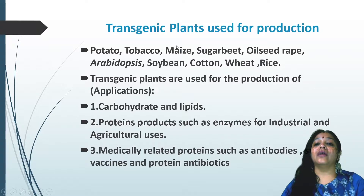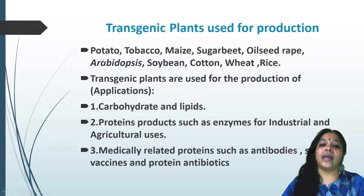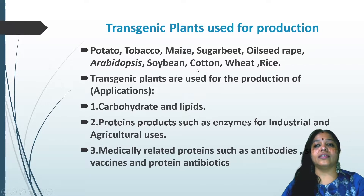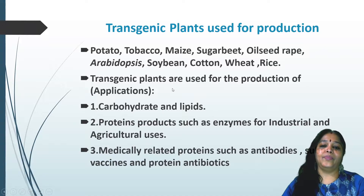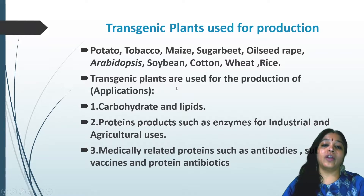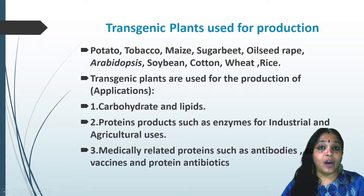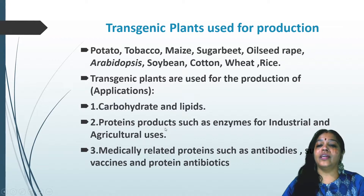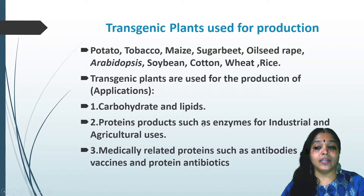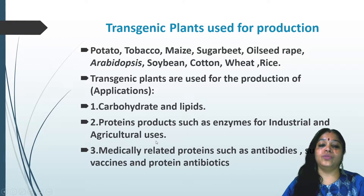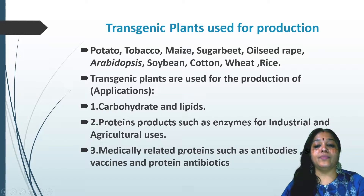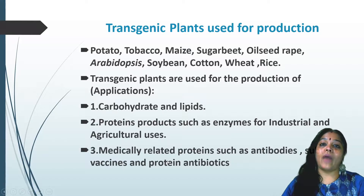Transgenic plants used for production include potato, tobacco, maize, sugar beet, oilseed rape, Arabidopsis, soybean, cotton, wheat, and rice. These plants are used to produce carbohydrates, lipids, and protein products such as enzymes for industrial and agricultural use, as well as medically related proteins such as antibodies, subunit vaccines, and protein antibiotics.